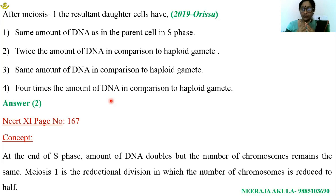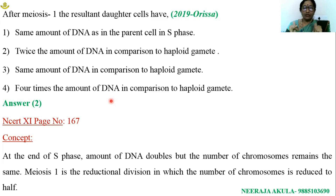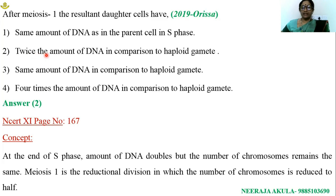Doubling of DNA content takes place during S phase of interphase. Meiosis I is the stage where distribution of chromosomes takes place. At the end of meiosis I, distribution of chromosomes takes place, and at the end of meiosis II, distribution of chromatids occurs. As a result, the content of DNA is reduced. After meiosis II, the chromosomal content is reduced to half. So after meiosis I, the resultant daughter cells have twice the amount of DNA when compared with that of the haploid gamete.